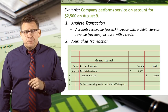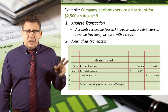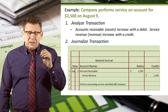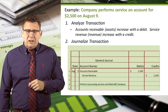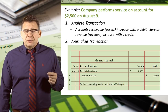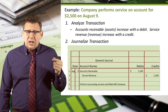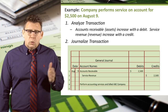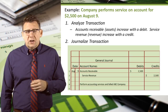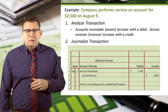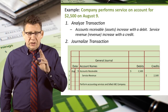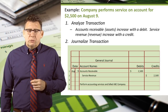So we'll enter the date, August 9th. We will then list the debit account, so we enter accounts receivable, and in the debit column we'll enter $2,500. Next we'll enter service revenue as the credit account — we'll want to indent the credit — and then enter $2,500 in the credit column. Finally we would enter the transaction description and we're done. We've entered this transaction into the general journal.